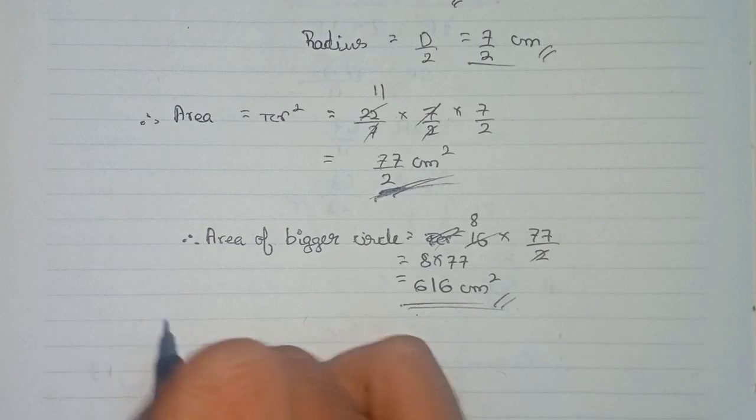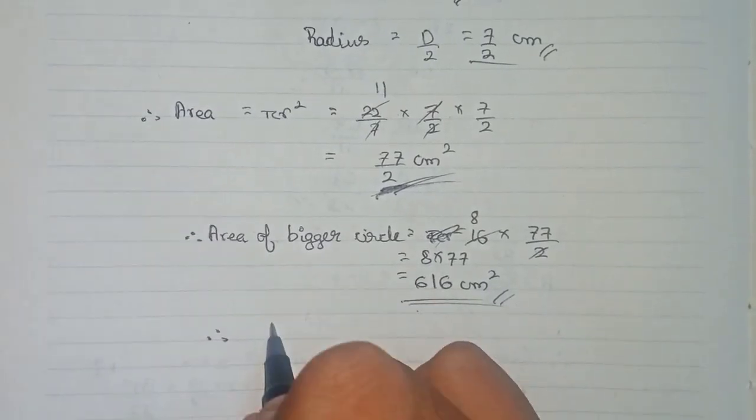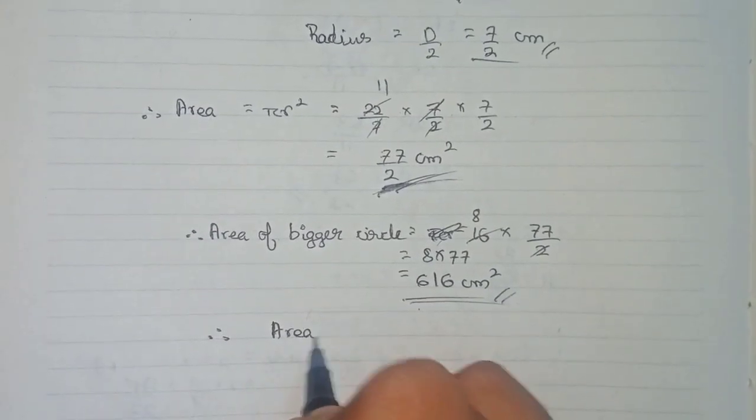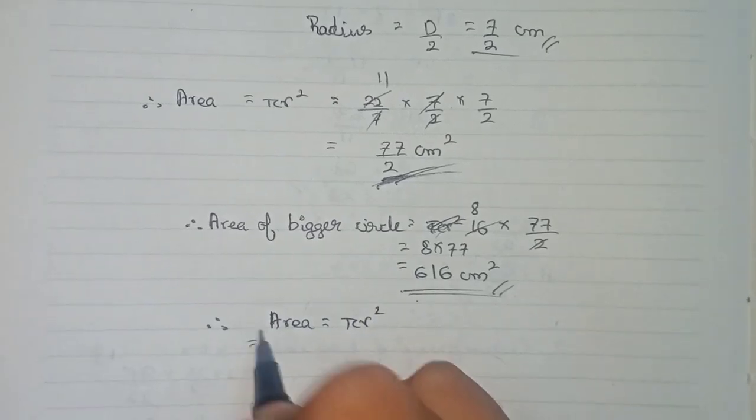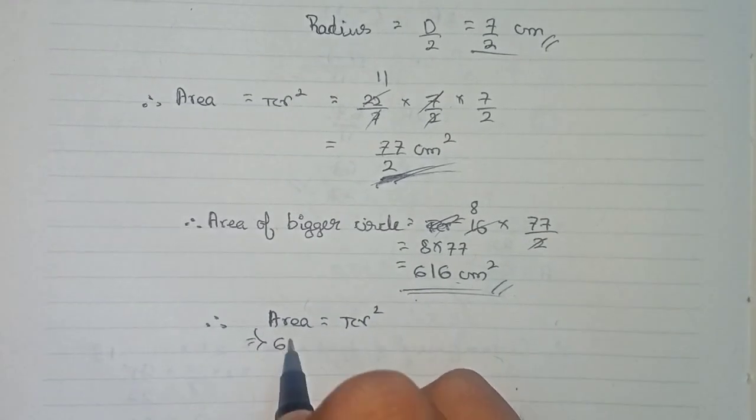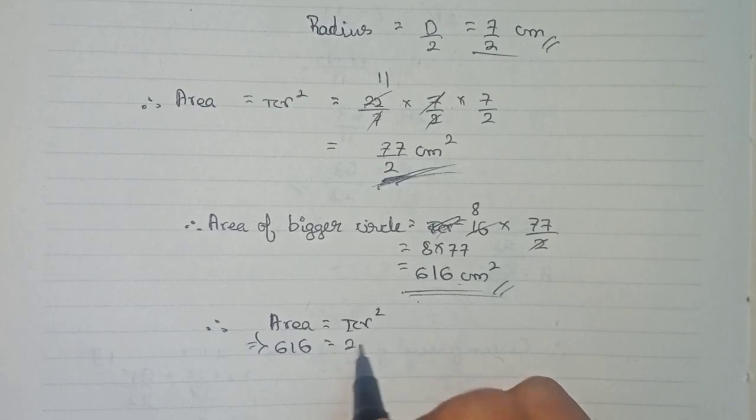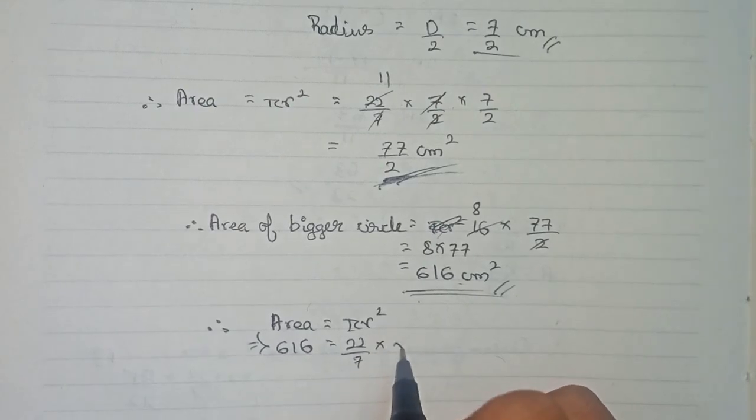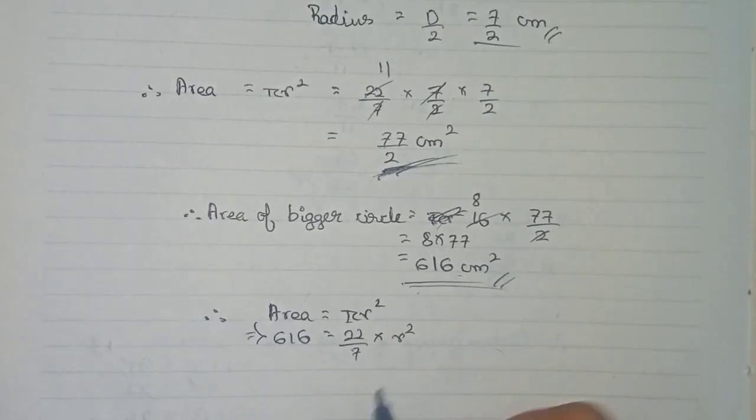Therefore we know that area is equal to pi r square, so we put down the values. Area is 616 equals 22 by 7 into r square. We need to find the value of this r.